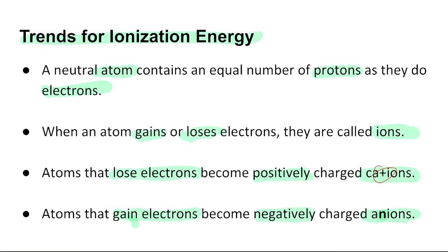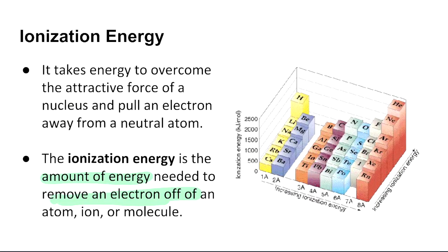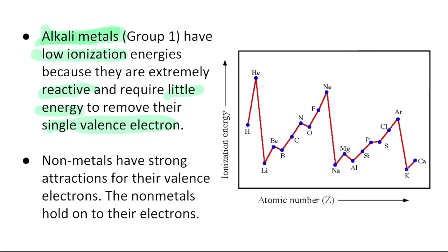That's why alkali metals will have the lowest ionization energy. So if you look here at the very bottom, alkali metal, alkali metal, alkali metal. Now, notice what has the highest ionization energy.